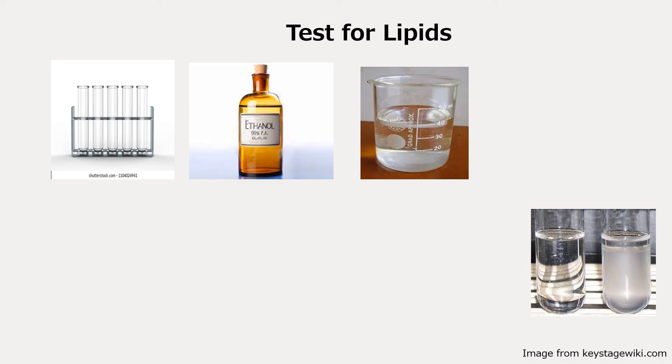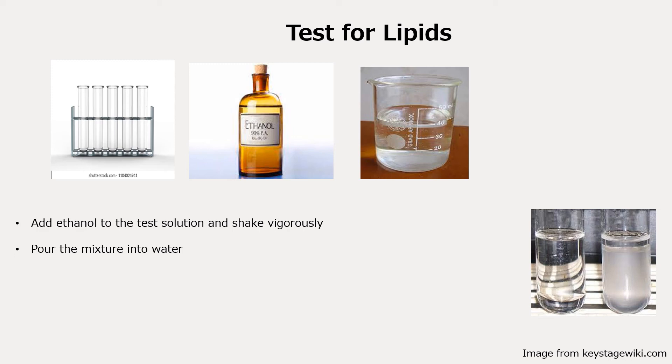The last test is the test for lipids. All you have to do is take ethanol and add it to your test solutions, then shake vigorously. The reason you use ethanol is that it is able to break down some of the bonds in your fatty acids. Once you've done that, pour it into water. If you observe a cloudy result, that tells you that you have lipids in your solution. If the solution remains clear, that is a negative result — there are no lipids.